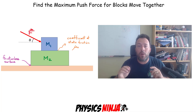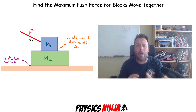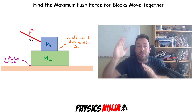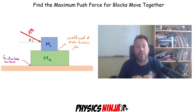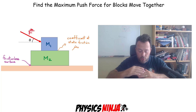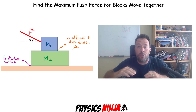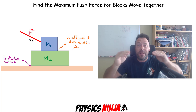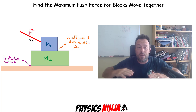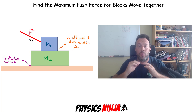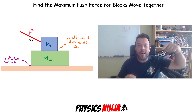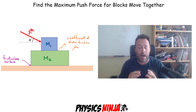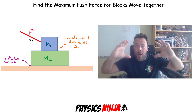Hi everybody, Physics Ninja here. Today I want to look at this two-block problem. We have two blocks, a mass M1 and M2, stacked on top of each other, and I am going to apply a force to the top block as shown in the figure. That force is at an angle with respect to the horizontal. In this problem we're going to assume that there is friction between the top two blocks, but there is very little friction between the bottom block and the surface — we'll call it a frictionless surface. My goal is to find the maximum force I could apply to the top block so that both blocks move together.